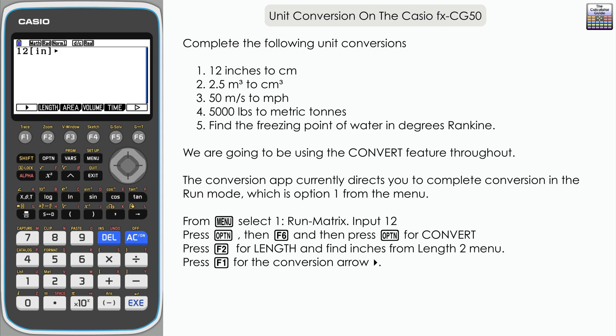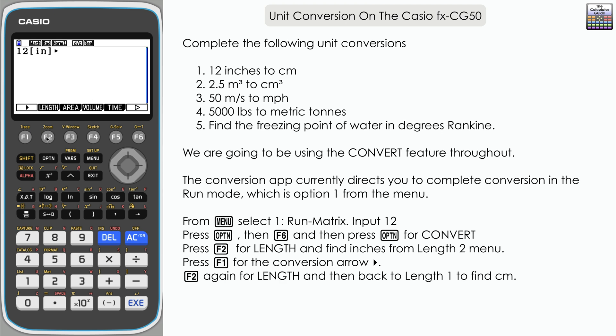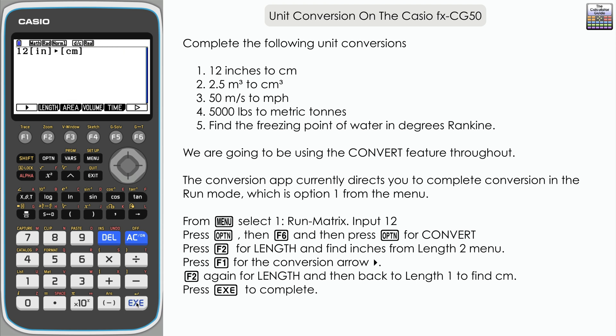12 inches to, and then well we want length again F2, back to length 1, and then it's centimeters. We've got the metric units in here, option 5 centimeters. Press execute and here we have our value in centimeters: 30.48.